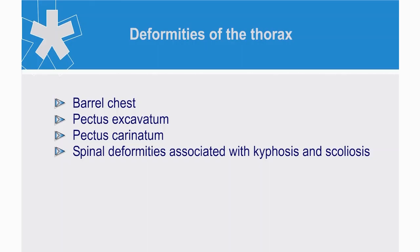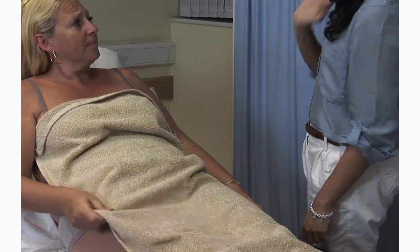General features on observation include gross deformities like a barrel chest, pectus excavatum, a pectus carinatum, or spinal deformities associated with kyphosis and scoliosis.